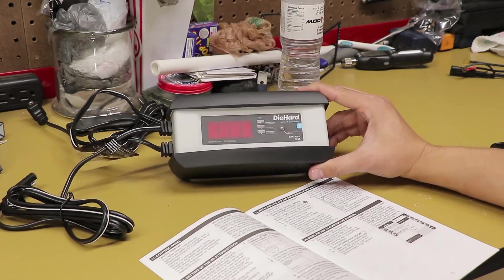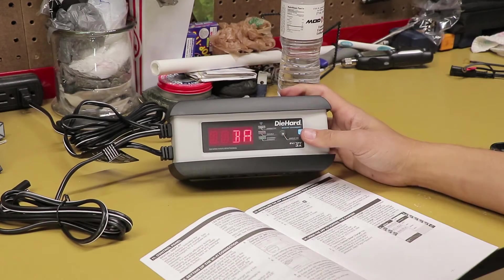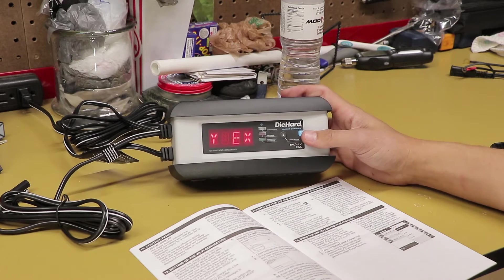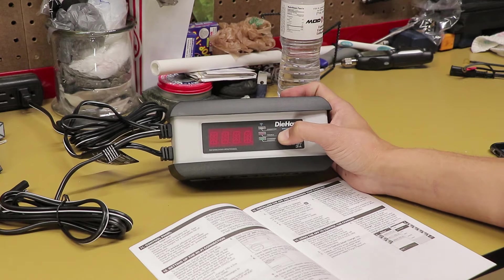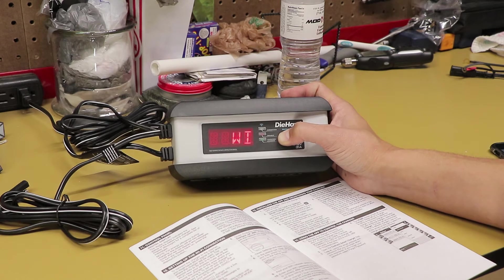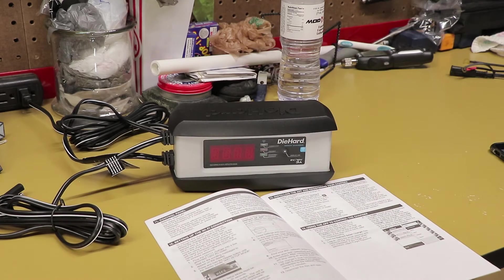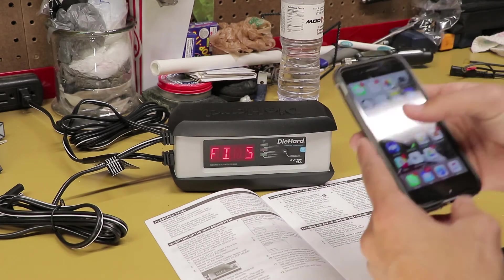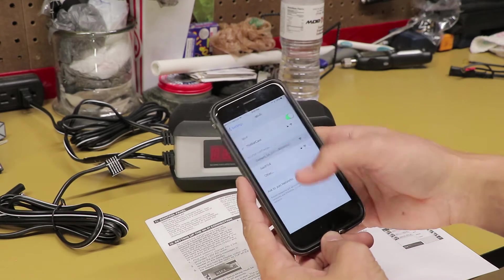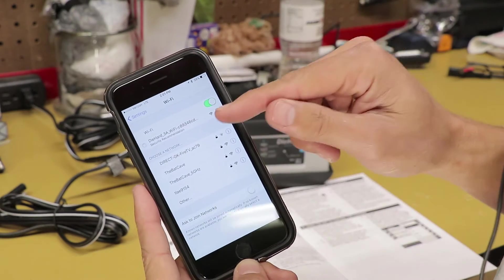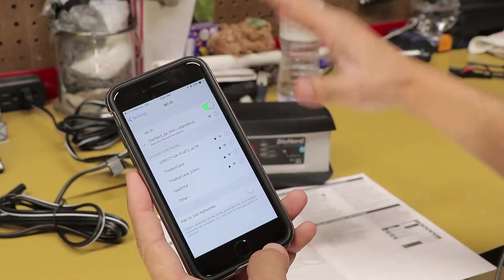So for the Wi-Fi part, the directions here say that you need to plug the charger in. So go ahead and plug that in. And as soon as the stuff starts scrolling, go ahead and press and hold the menu button here. And then it'll enter Wi-Fi setup. So now that Wi-Fi is now on there, we have to go to our phone, and we're going to be searching. There it is. And go ahead and connect to the Wi-Fi for the phone, or not the phone, for the charger.